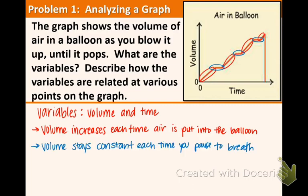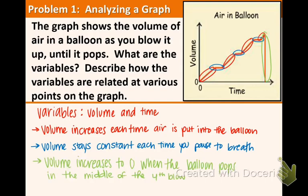And what is happening at the very end of the graph? Well as you can see it drops. The volume drops all the way to zero. So at that point the balloon is popping. The volume decreases to zero when the balloon pops in the middle of the fourth blow. And that's it for example one.